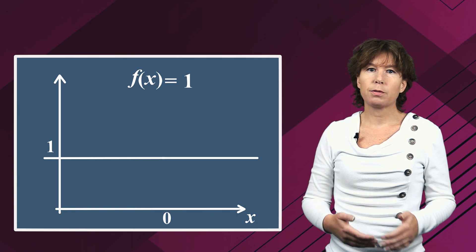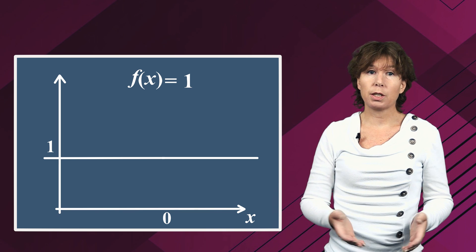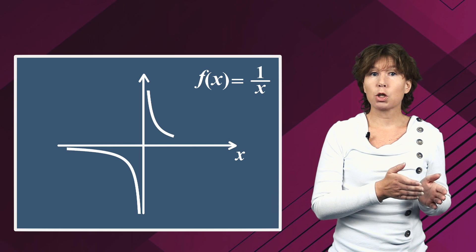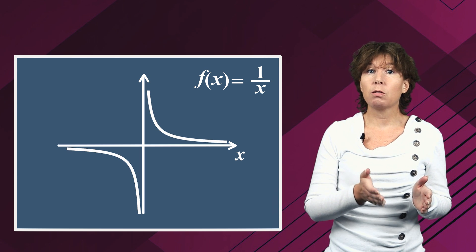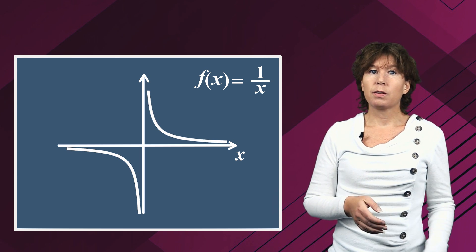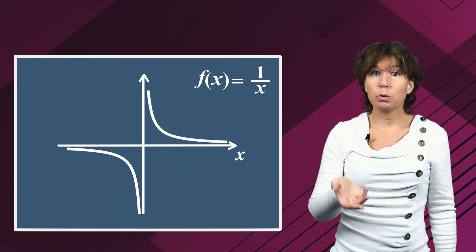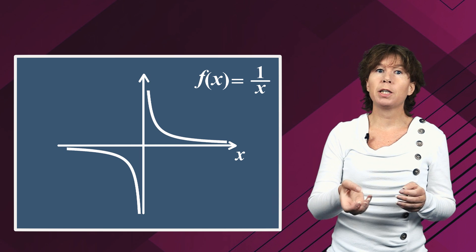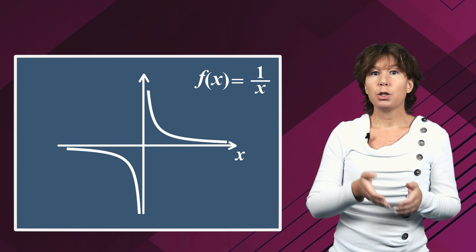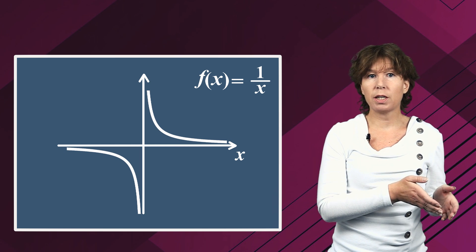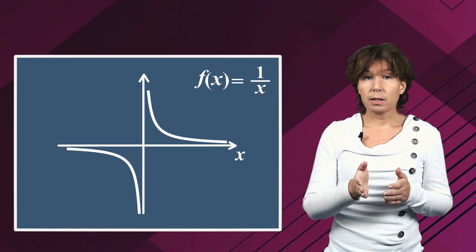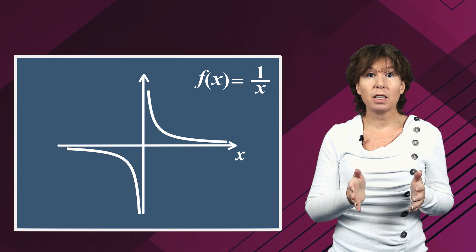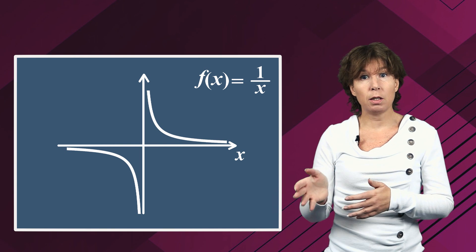But many functions have singularities that are more interesting than that. The simplest example that's still interesting is the function one over x, which has a singularity at zero. This singularity cannot be removed — there is no point you could fit in at zero that would make this function continuous. You won't get from the left to the right, because the function diverges when x gets close to zero, so the value of the function becomes infinitely large.